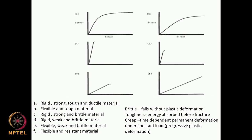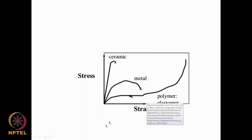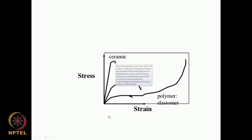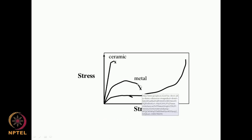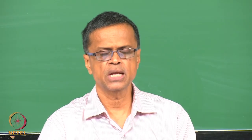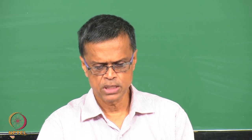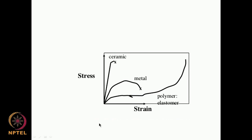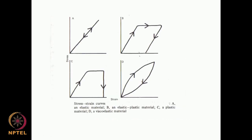To recap: ceramic goes up and snaps — it is a brittle material. Metal like stainless steel goes up and then absorbs energy — it is ductile and deformation takes place later. Polymers have a very low elastic region but a very large plastic region. If you look at the stress-strain curve for an elastic material, once the load is removed, it comes back along the same straight line.